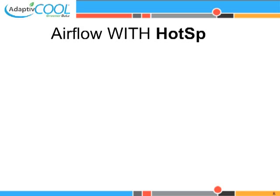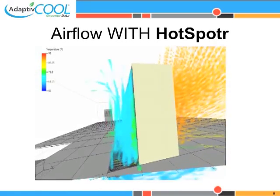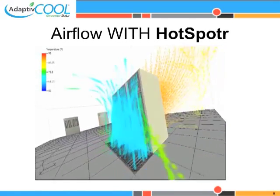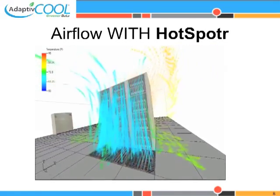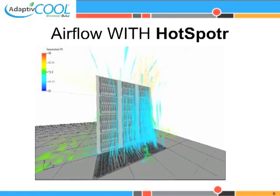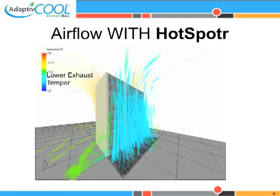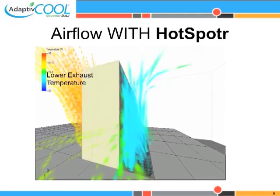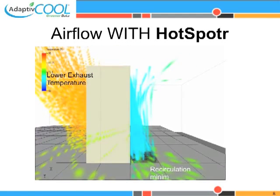This animation shows airflow and temperature with a hotspotter. The hotspotter maintains enough cold air in front of the servers, thereby avoiding high server temperatures and airflow recirculation from hot aisles.